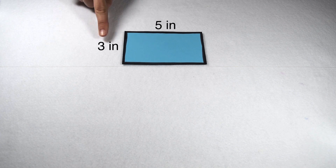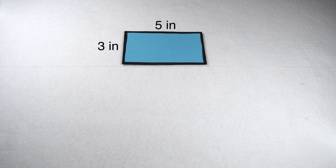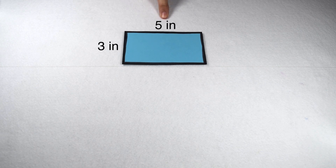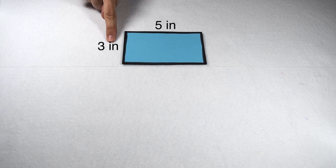To do that, we're going to use this rectangle here with dimensions of 5 inches by 3 inches. For the purposes of what we're doing, we're going to treat 5 inches as our length and 3 inches as our width.